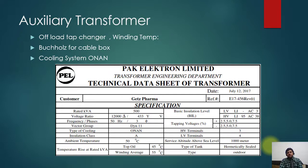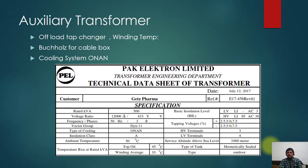Then there is a winding temperature indicator — mostly it is not available, but in some cases it is. Buchholz relay for the cable box may also be provided. The cooling system is oil natural air natural (ONAN); there is no forced cooling here normally. I have provided the nameplate for your study — the transformer is rated 500 kVA.